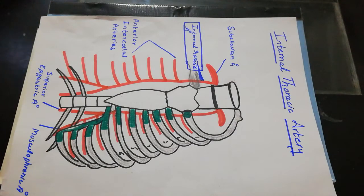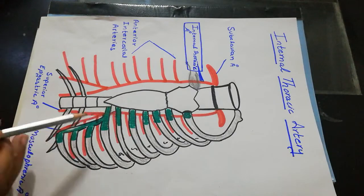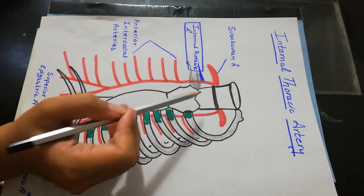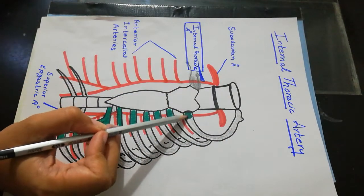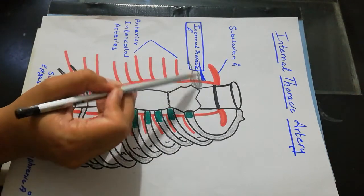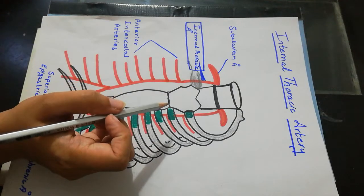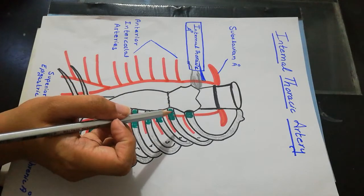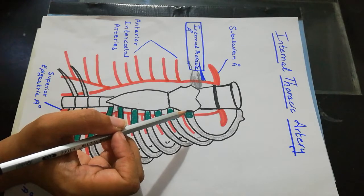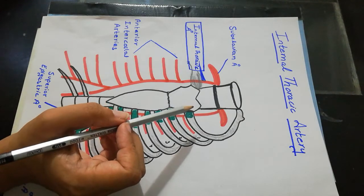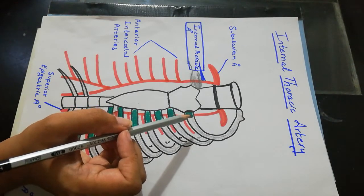We will now discuss the relations of the internal thoracic artery in its upper and lower parts. In its upper part anteriorly, the first costal cartilage and the sternal end of the clavicle are present. Also anteriorly are the internal jugular vein, which drains into the brachiocephalic vein, the brachiocephalic vein itself, and the phrenic nerve.